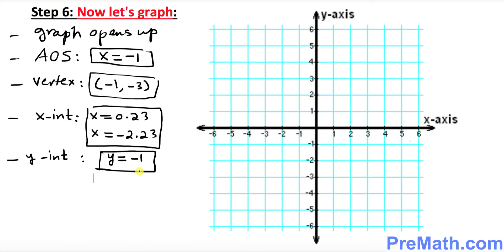Finally, in the last step we can go ahead and plot the graph. We have gathered all the info: the graph opens up, axis of symmetry x equals negative 1, vertex at negative 1 comma negative 3, x-intercepts and y-intercept. First, draw the dotted vertical line for the axis of symmetry at x equals negative 1.